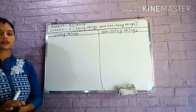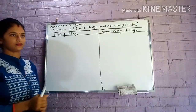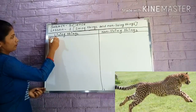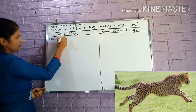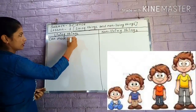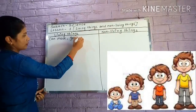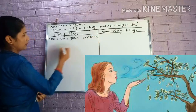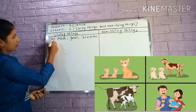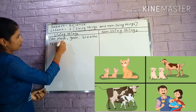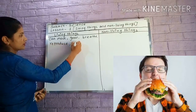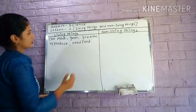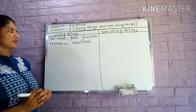Here I write the features of living things. Number one: living things can move. Living things grow. Living things breathe. Living things reproduce. Living things need food. These are the features of living things.